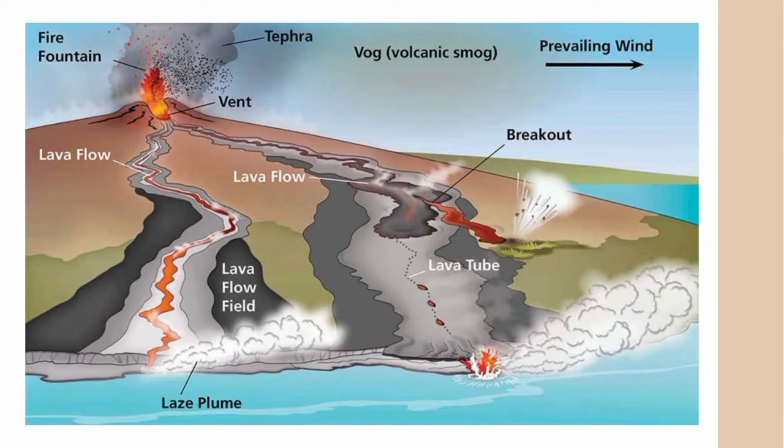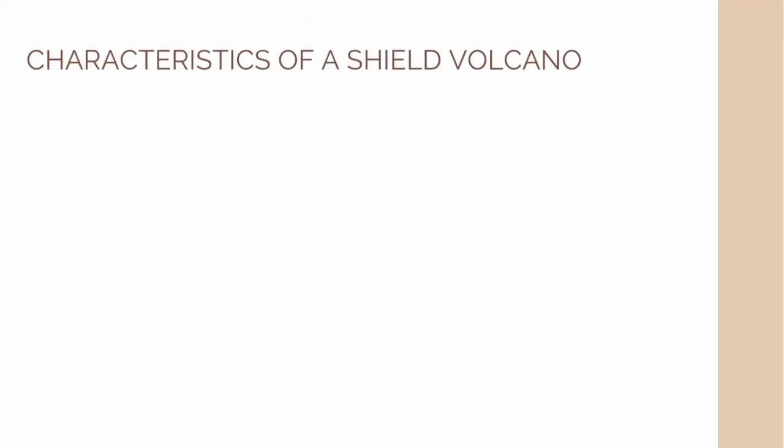The anatomy includes the breakout, fire mountain, lava flow, lava flow field, lace plume, lava tube, debris, vent, and the volcanic fog or volcanic spark.